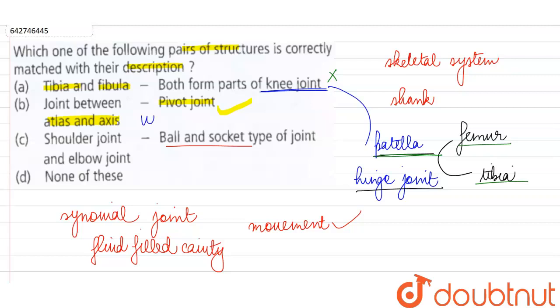And atlas and axis, these are the names of our first two vertebrae. We know that our vertebral column or our backbone is not a single bone. It is made up of a number of serially arranged units.